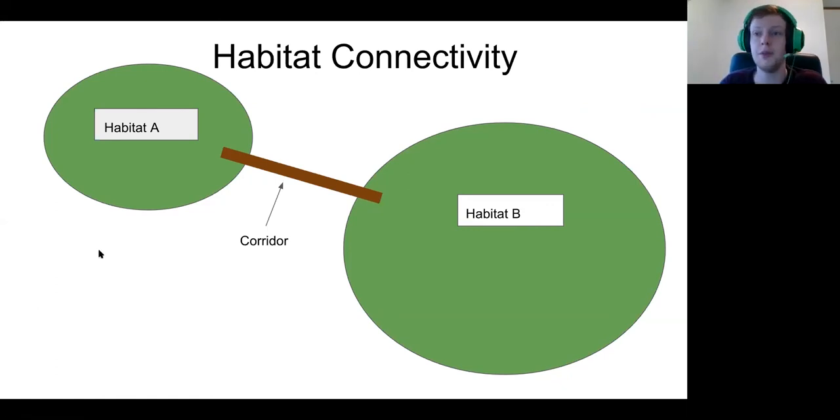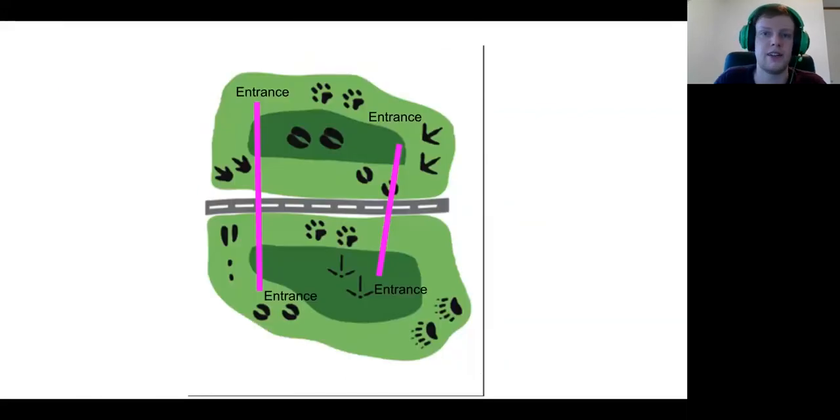So if an animal in Habitat A, if they start to run out of food and they need to get to B, without a corridor, without the deer signs, it might be dangerous for them to get across that road. But if you do certain things like put tunnels or overpasses or don't put a road in there in the first place, then they can use that as a corridor to get from the habitat that doesn't have the food to the one that does, or back.